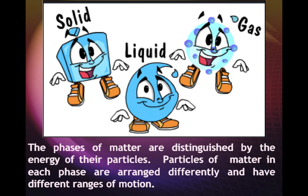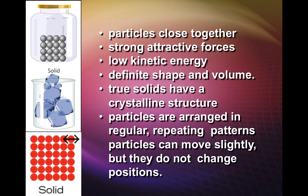The phases of matter are distinguished by the energy of their particles. Particles of matter in each phase are arranged differently and have different ranges of motion. Solids, for example: the particles are close together with strong attractive forces and low kinetic energy, giving a definite shape and volume. True solids have a crystalline structure — the particles are arranged in regular repeating patterns and can move slightly, but do not change positions.